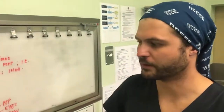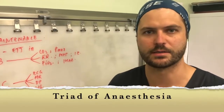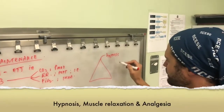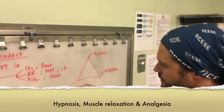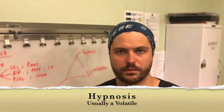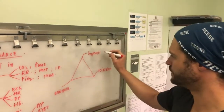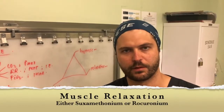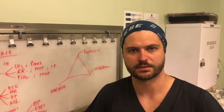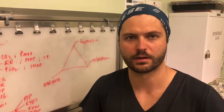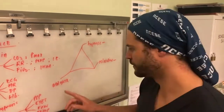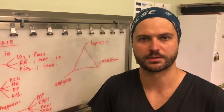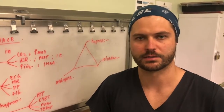Part of the maintenance phase after the ABCDE mnemonic is to think of the triad of anesthesia — hypnosis, muscle relaxation, and analgesia. For hypnosis in a basic GA, you'll be using volatile anesthetic to keep your patient deep. With regards to muscle relaxation, you may have used suxamethonium for your induction; depending on the type of operation, such as a caesarean section, you might need to top the patient up with a non-depolarizing muscle relaxant such as rocuronium. For analgesia, we're going to use a multimodal approach using analgesics from different classes, such as opioids, non-steroidals, and other drugs such as ketamine.